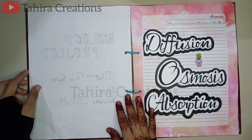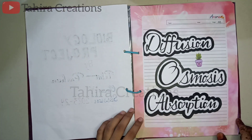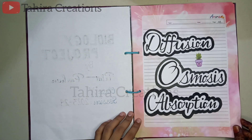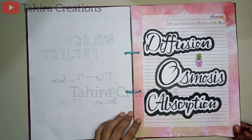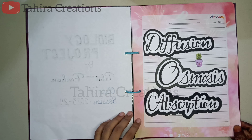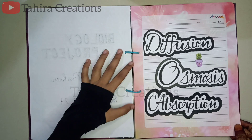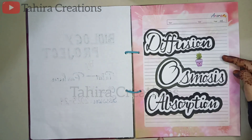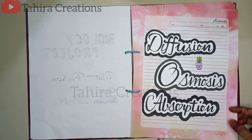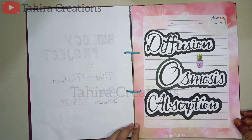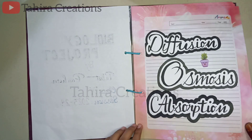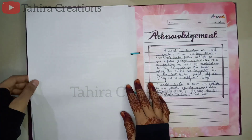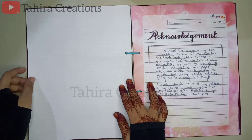Next is the topics page — you can include the topics in the first page itself or write it on a separate page as well. After that is the acknowledgement.